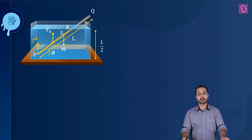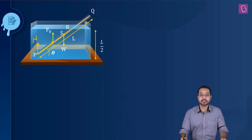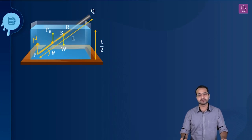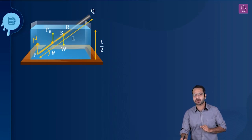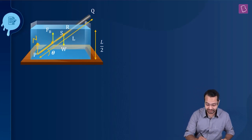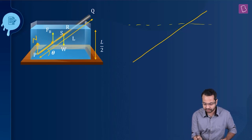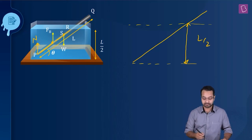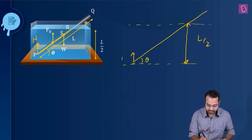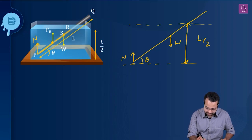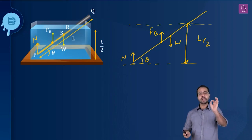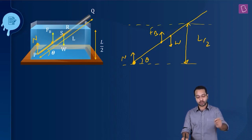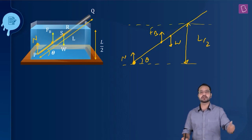Under these circumstances the rod is in equilibrium — both translational and rotational — meaning the net torque about any point is zero. We choose our pivot point smartly: the point where the rod contacts the tank bottom. This way the torque of the normal force becomes zero and we don't need to worry about it. The clockwise torque of the weight must equal the anticlockwise torque of the buoyant force.